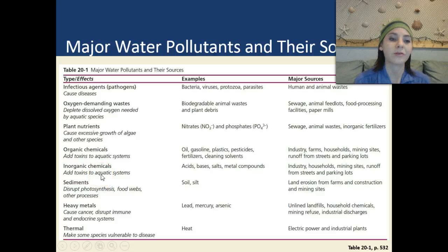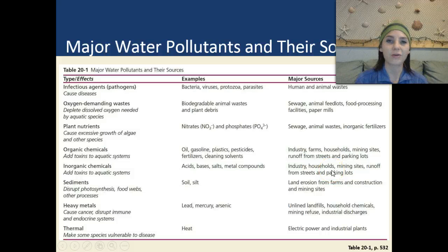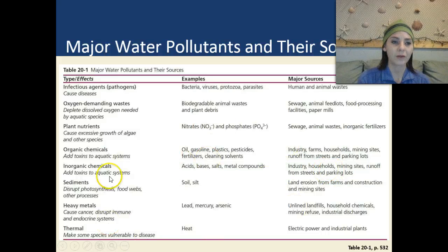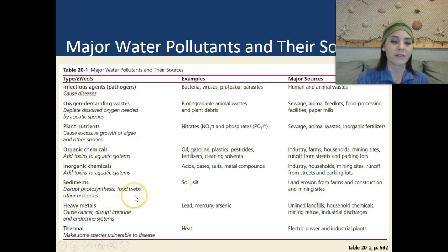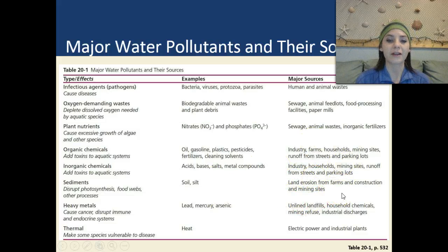We have inorganic chemicals, which also add toxins to aquatic systems. Those can be acids, bases, salts, and metal compounds, and again they come from industry, households, mining, and runoff from streets and parking lots. We also have sediments, which disrupt photosynthesis, food webs, and other natural processes. Examples are soil and silt, and these come from land erosion from farms, construction sites, and mining sites.